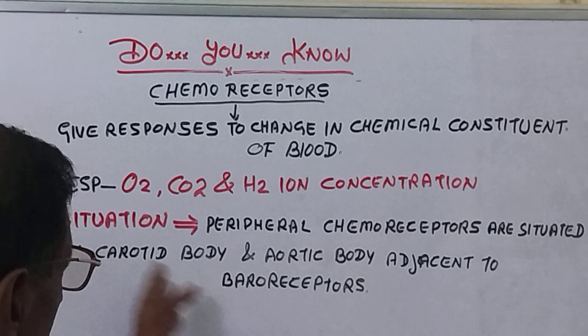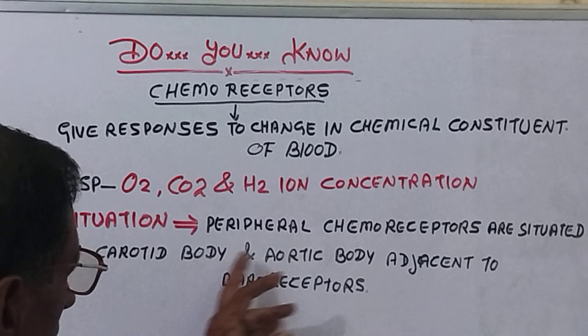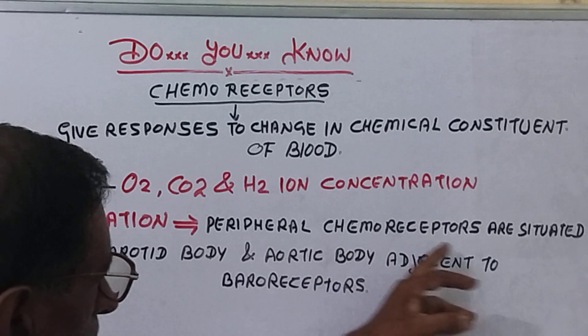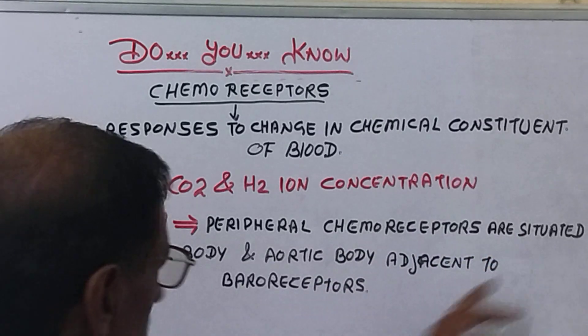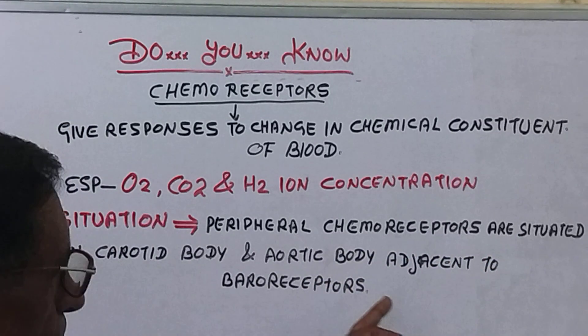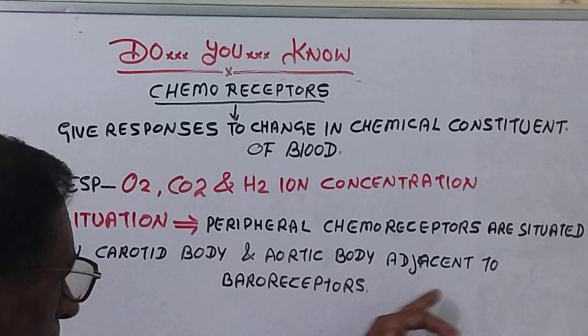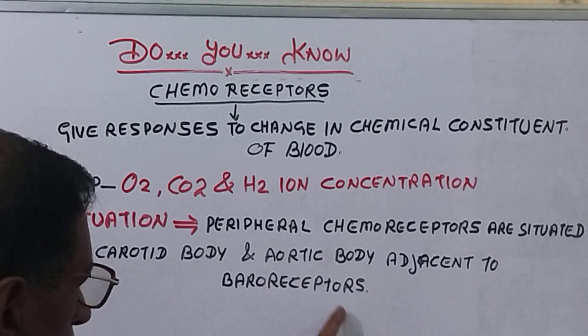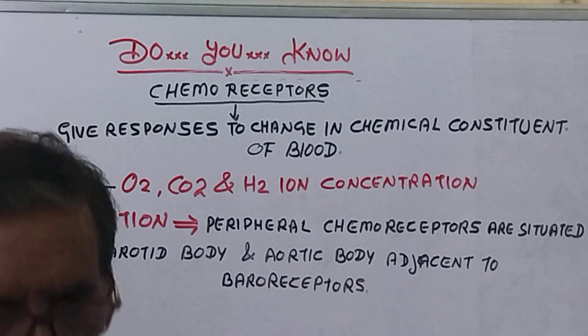Where are they? Peripheral chemo-receptors are situated in the carotid body and aortic body, in addition to other bioreceptors.